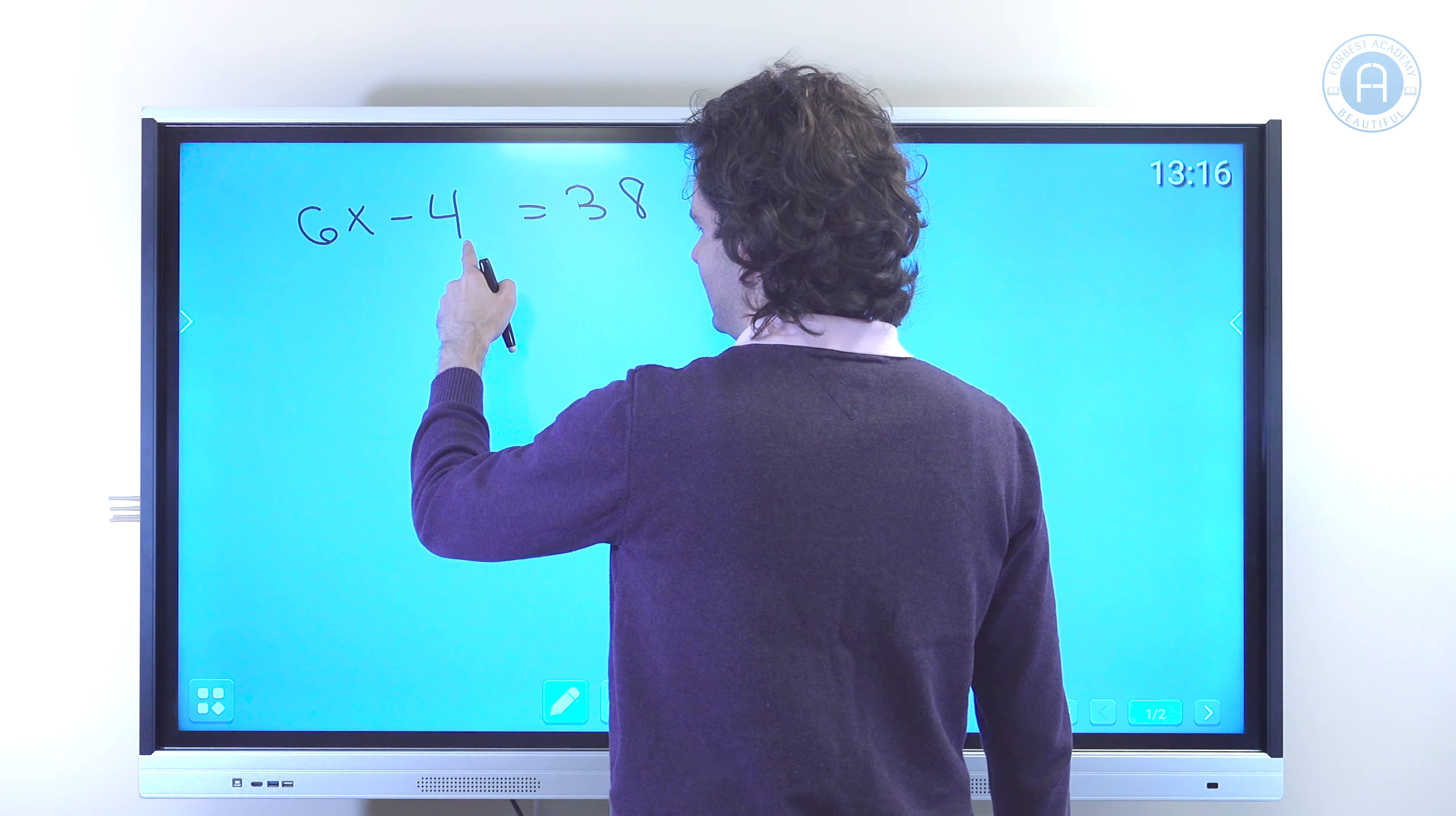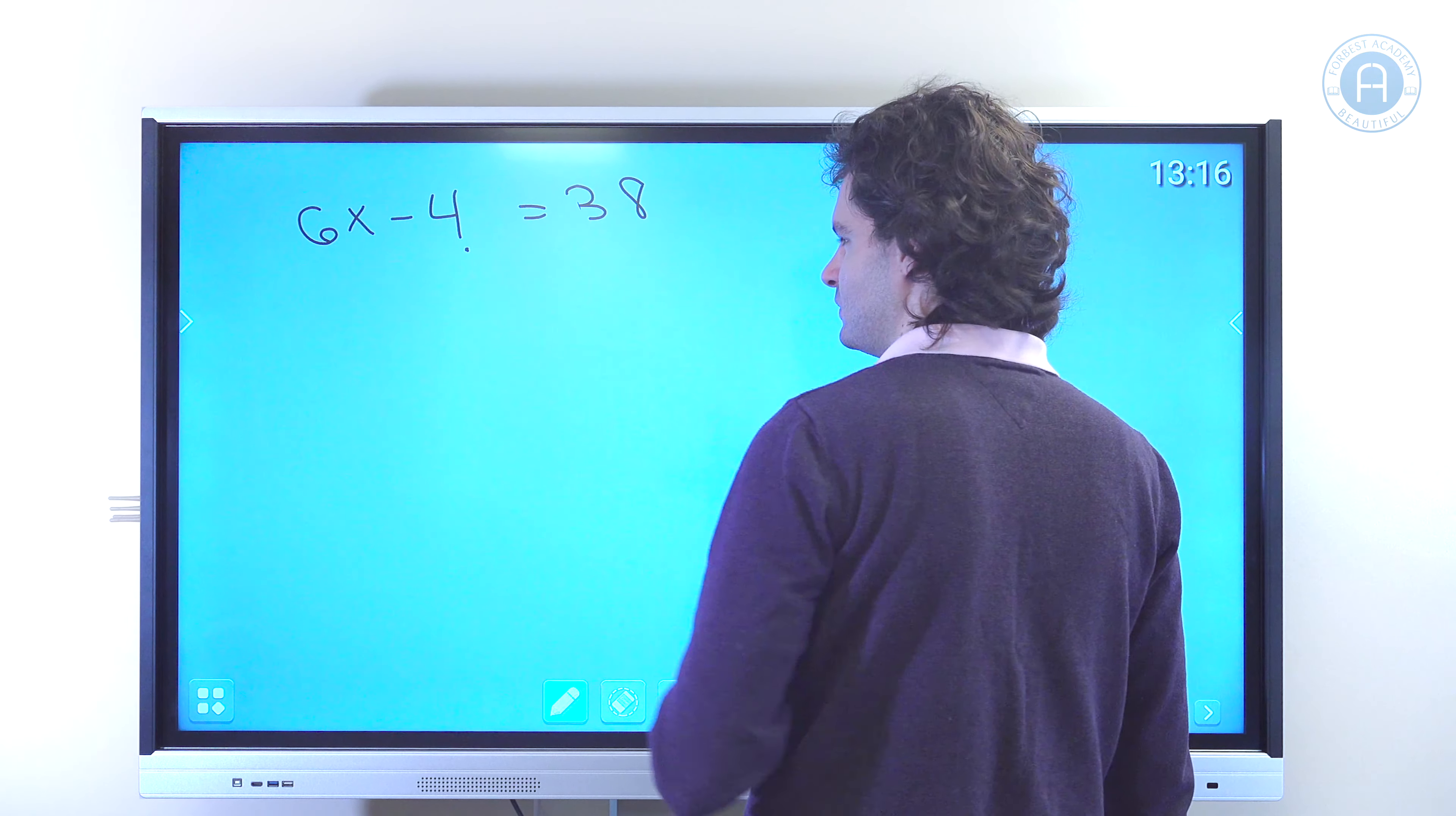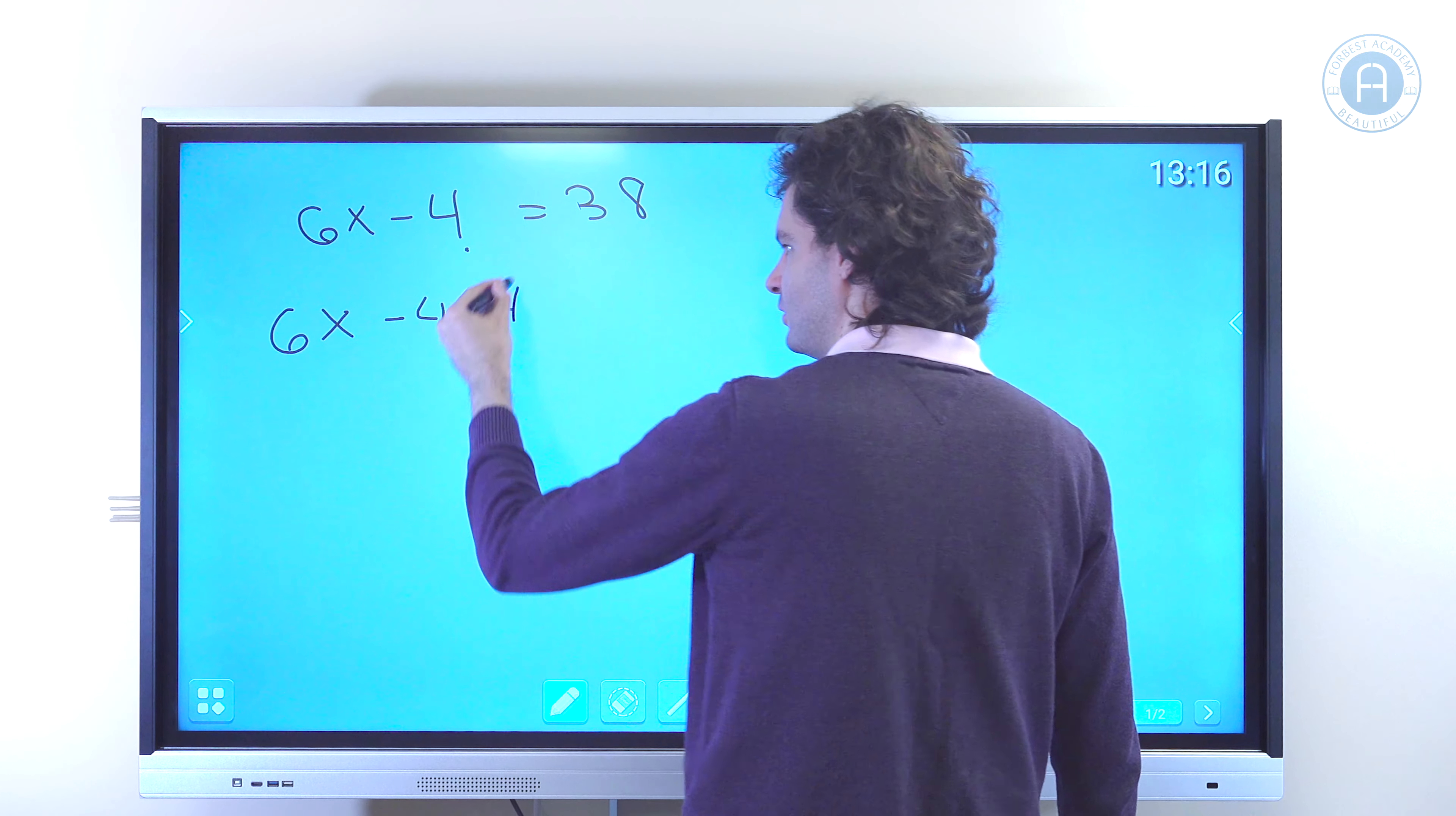So let's remove this 4. I'm going to add 4 to both sides of the equation. That means that 6x, well minus 4 plus 4, well that goes away.